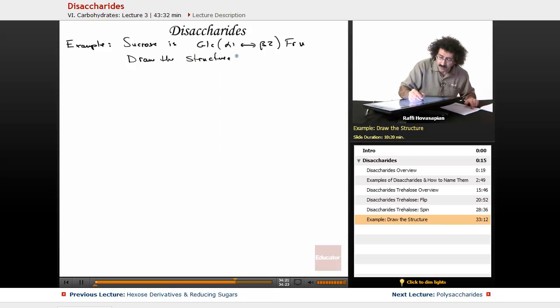Draw the structure. This is a very typical question on an exam. In this particular case, I'm joining the anomeric carbon of both. I'm going to have to bring the carbons in close proximity, so I'm going to have to flip or spin the second monosaccharide. I'm going to choose the flip version.